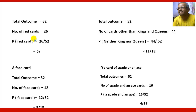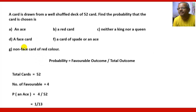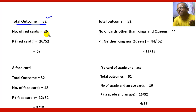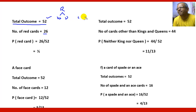Here is another question: what is the probability of getting a red card? The total outcomes are 52. The number of red cards are 26, as the cards are divided into 4 suits — hearts, diamonds, clubs, and spades — and each suit has 13 cards.